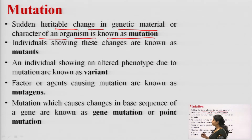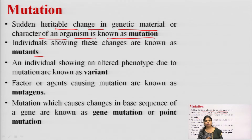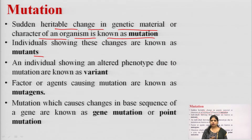Individuals showing these changes are known as mutants — plants or organisms which get mutations are known as mutants. Individuals showing the altered phenotype due to the mutation are known as variants. The factors or agents which cause mutation are known as mutagens.